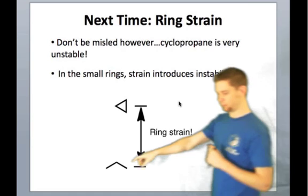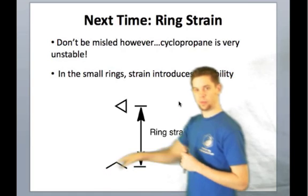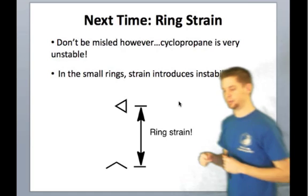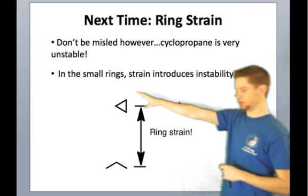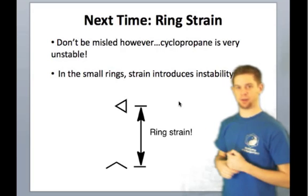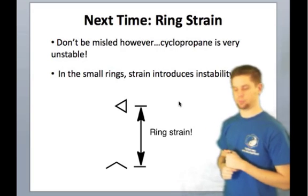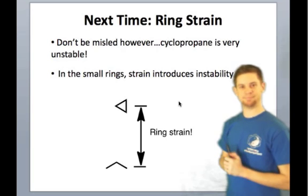Tying the two carbons of propane together will actually introduce quite a bit of instability, and you can think about this in terms of deviations of cyclopropane from the ideal bond angle of 109.5 degrees. But that's all I've got for today.